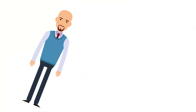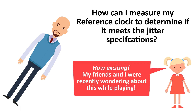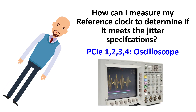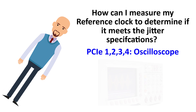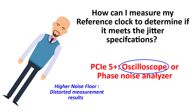The PCIe standards provide various options to determine if a real-world reference clock we plan to use meets the desired specifications. For the older PCIe versions up to version 4, this involves saving many periods of the proposed clock waveform using a high-end digital oscilloscope. As the jitter requirements have gotten tighter with each successive generation, however, the noise floor of digital oscilloscopes has been adding increasingly more error relative to the overall results.